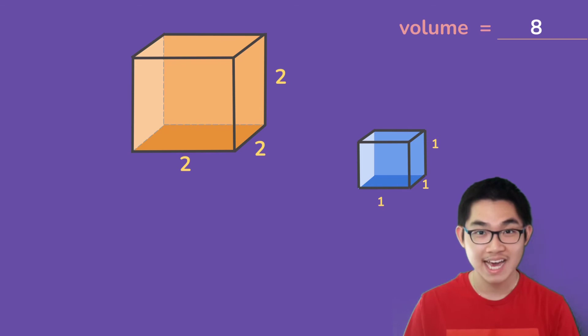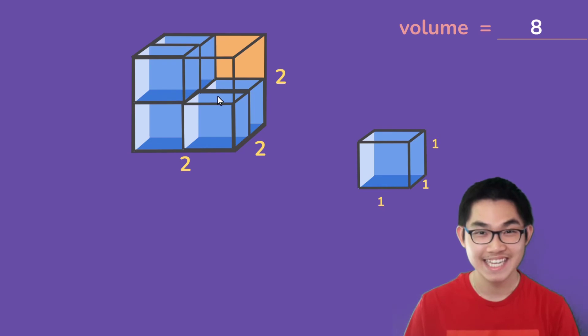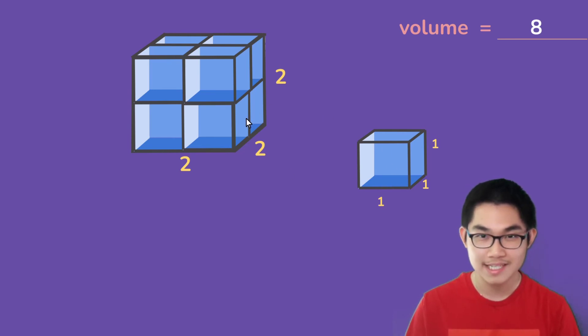Well, let's count together. So we can put in one, two, three, four, five, six, seven, and eight, which is the same number as the volume. So whenever you have a cube and you want to find the volume, you can either put these little cubes inside the cube, or you can just take the three sides and multiply it together and then you will get the volume.